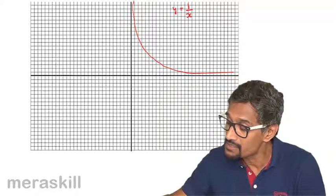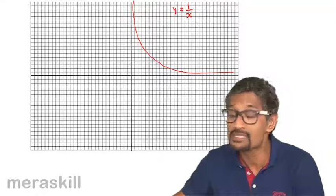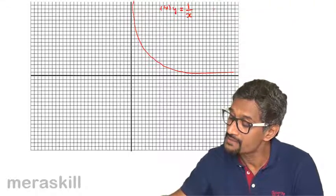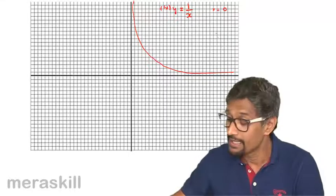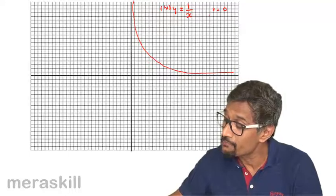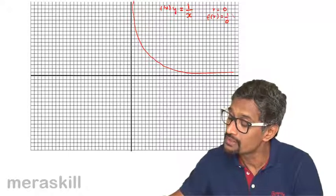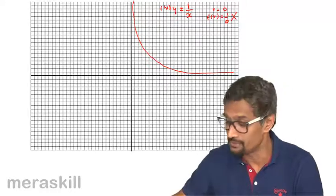Just imagine, suppose X is 0, then Y or f of X. Suppose X is equal to 0. In such cases, what will f of X become? f of X will become 1 upon 0, which is absolutely indeterminate.